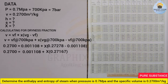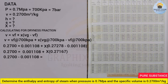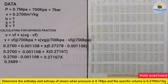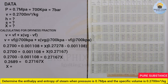Collecting like terms, take 0.001108 to the left-hand side: 0.2700 minus 0.001108 equals 0.27167 times x. Subtracting gives 0.2689 equals 0.27167 times x. Dividing both sides by 0.27167, the dryness fraction x equals 0.9897.